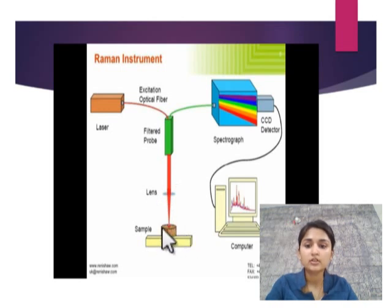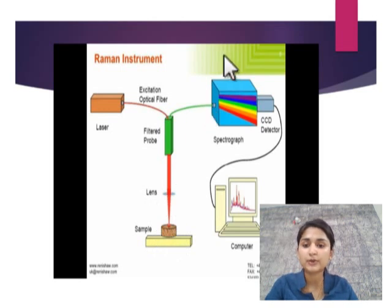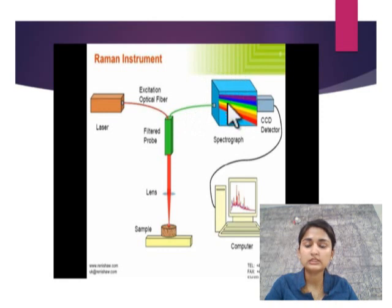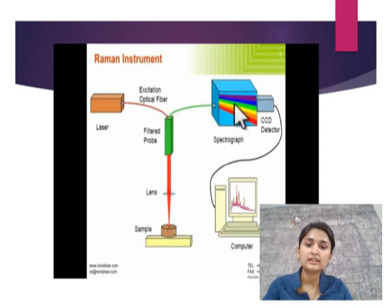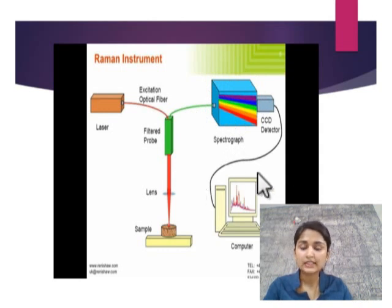The lens plays a role in directing the light towards the sample. The third principal component of the Raman spectrometer is the spectrograph. This spectrograph detects the anti-Stokes and Stokes scattering and gives the information to a computer, which then plots different graphs for different samples.